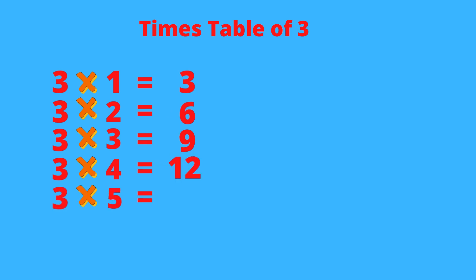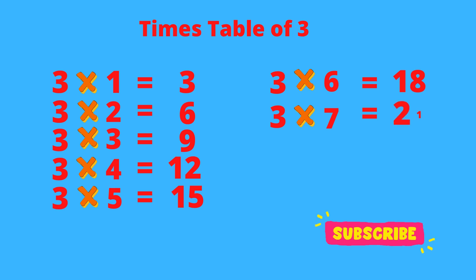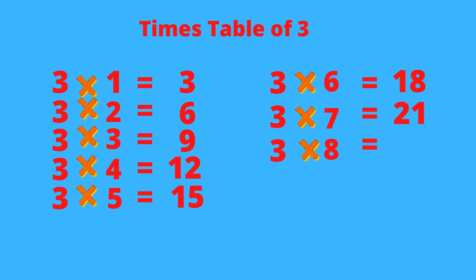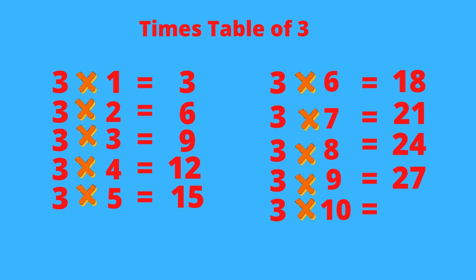3 times 6 equals 18, 3 times 7 equals 21, 3 times 8 equals 24, 3 times 9 equals 27, and 3 times 10 equals 30.